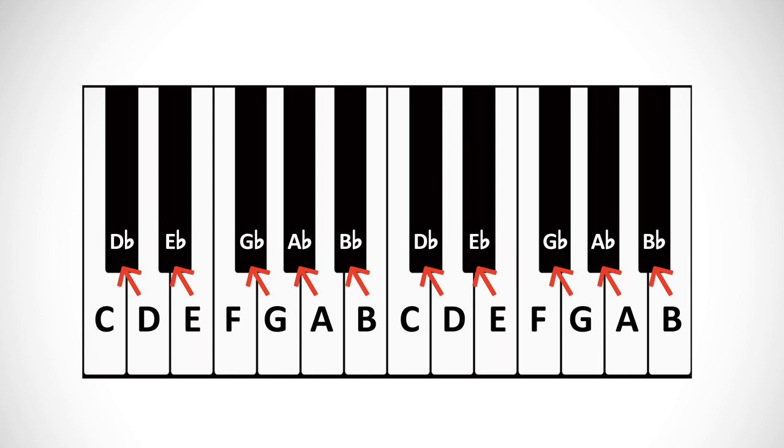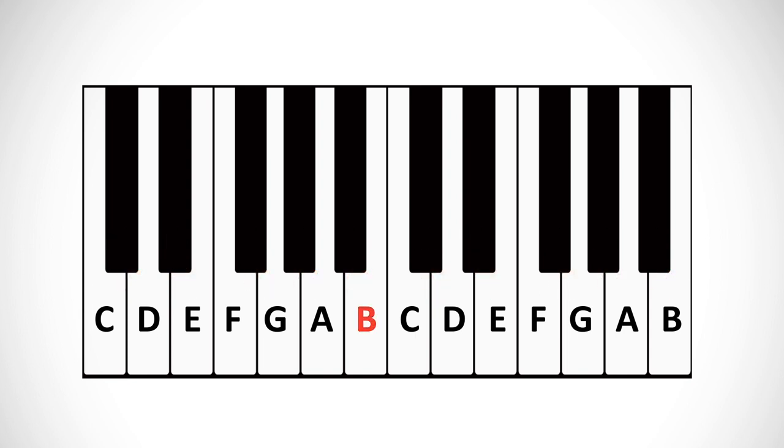And yes, sometimes you can get a white key with a sharp or flat name. Like if we start on B, then say we want B sharp, well, the key immediately to the right of B is C. It's still a white key, but in certain contexts, we may need to call it B sharp. This situation is pretty rare though.